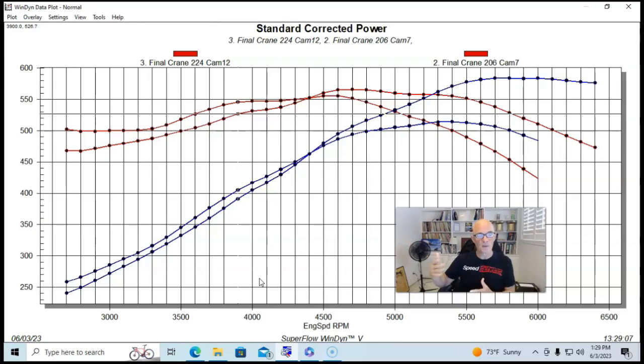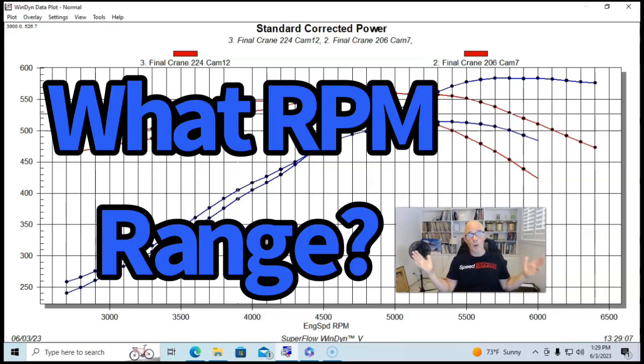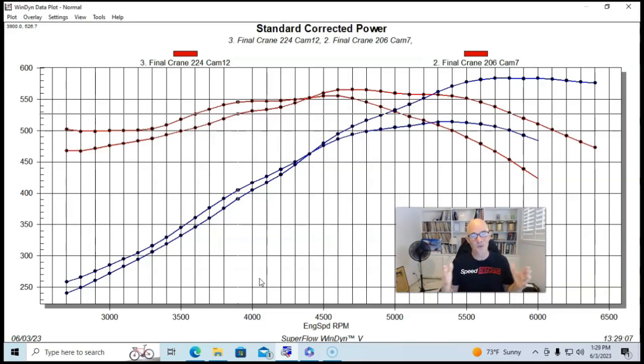Then at least this 224 cam on a 408, definitely the way to go. This is very important. Where do you want to make your power? Which one is more important? There's always going to be a trade off. In fact, let's take a look and see here.